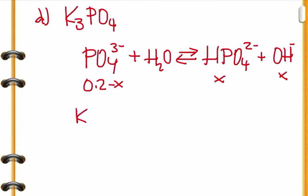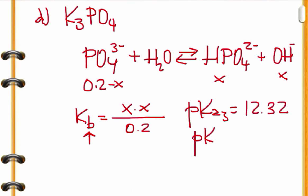So we start with 0.2 minus X generating X and X. One could use that constant of hydrolysis that we discussed before. But let's use Kb here. This is the base. And the equilibrium constant would be X times X divided by 0.2. So we know the pKa, better say, this would be pKa3, right? Which is 12.32. From there we can calculate the pKb would be 14 minus 12.32. In other words, it would be pKb equals 1.68.